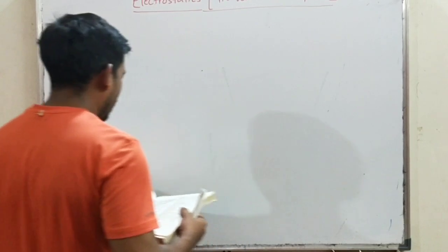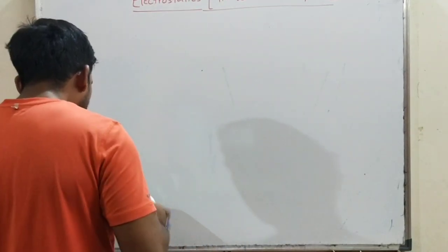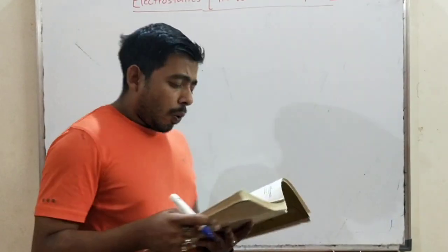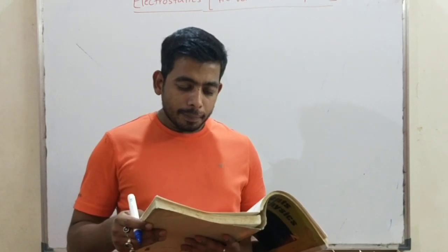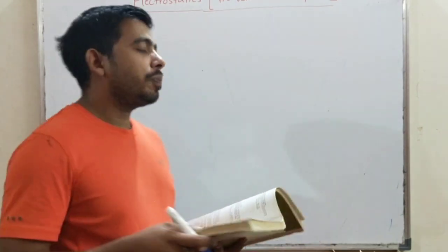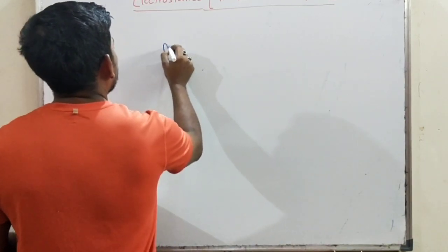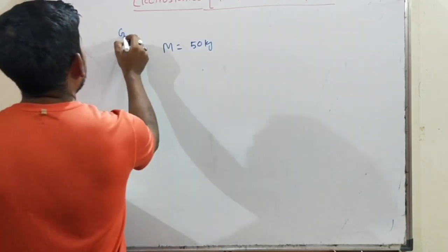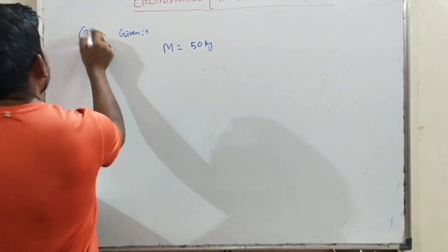Question number 3: What should be the two equal charges so that the force between them equals the weight of a 50 kg person? Mass is 50 kg.